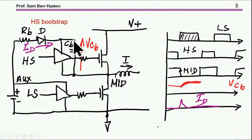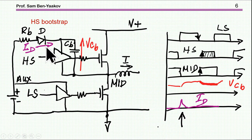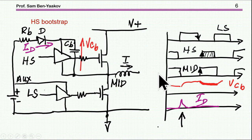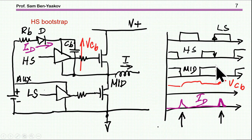Then the current drops to zero — the capacitor is already charged and its voltage is essentially constant. Then when the low side goes down and the high side goes high and the midpoint goes high, there is a disconnection and the diode is actually reverse biased. The capacitor then becomes the only supply for the high side during the drive of the gate. When the gate is driven, there is a drop of the capacitor voltage because charge is being transferred from the capacitor to the gate. Then again the high side goes down and the low side goes up and the midpoint goes down.